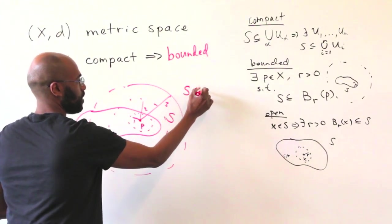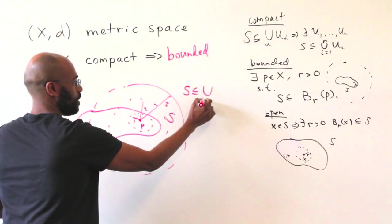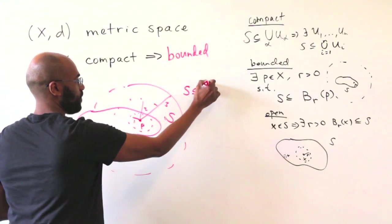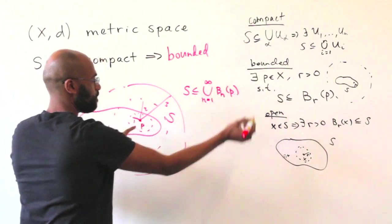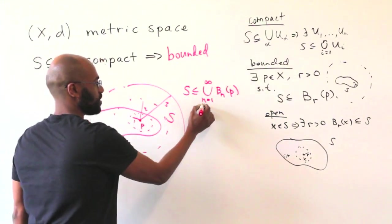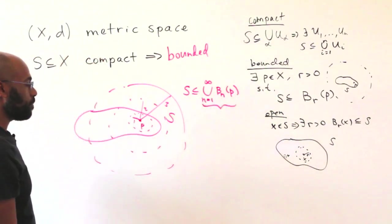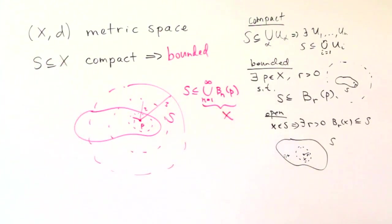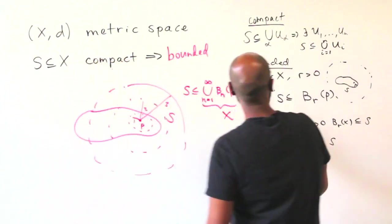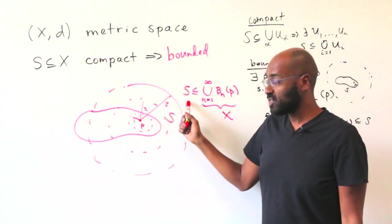Right, so we'll have something like this: S sitting inside of the union, N equals 1 to infinity of the ball of radius N centered at P, because this union of open balls actually is the entire metric space X.